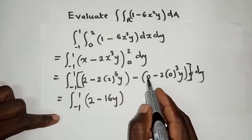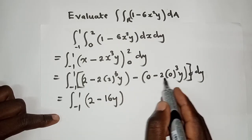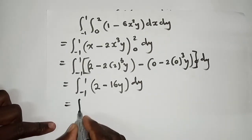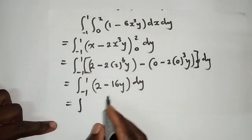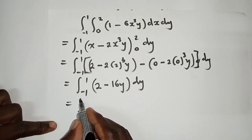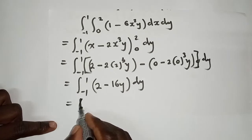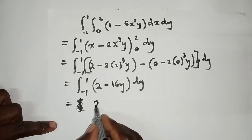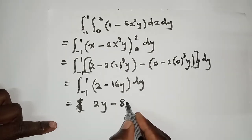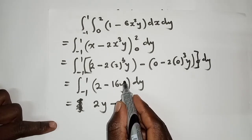So have a 2 here. Here we have negative 16Y - it's 8 times negative 2 equals negative 16. Here everything will just be zero. So we have something like this.